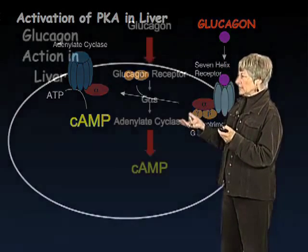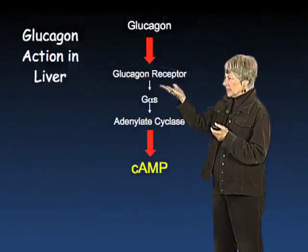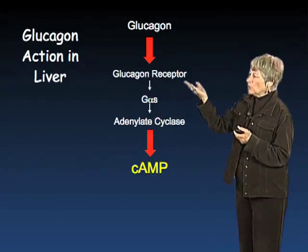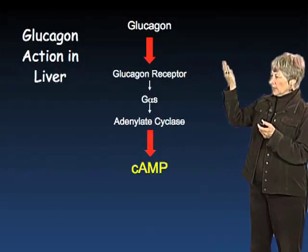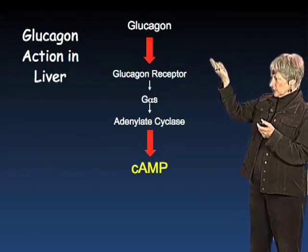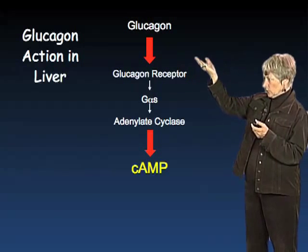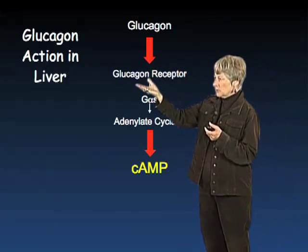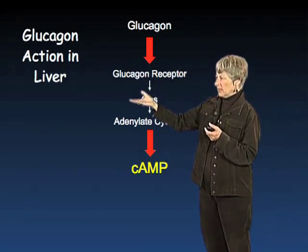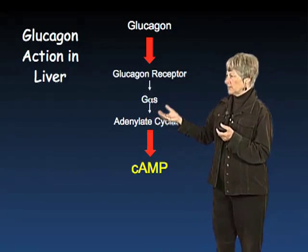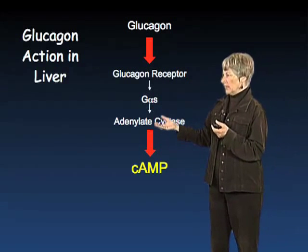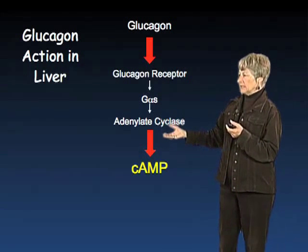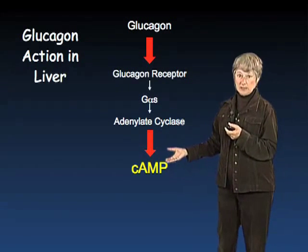This is summarizing what I just told you: your extracellular signal, in this case glucagon — a hormone from the pancreas — binds the glucagon receptor, activates the G-alpha subunit. That activates adenylate cyclase and makes cyclic AMP.